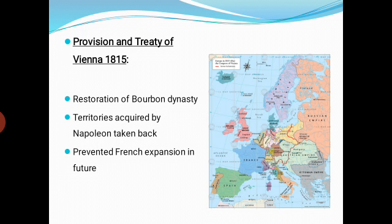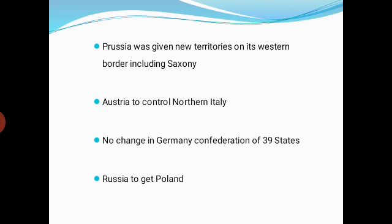A map is given showing the changes after 1815, which we can study with the help of this map. The fourth provision: Prussia was given new territories on its western border, including Saxony. Saxony is an eastern German state, and it was included within Prussia. This was another important provision under the Treaty of Vienna.